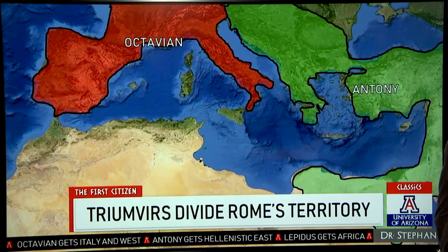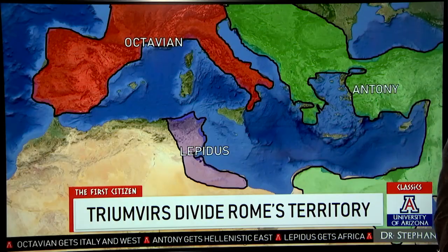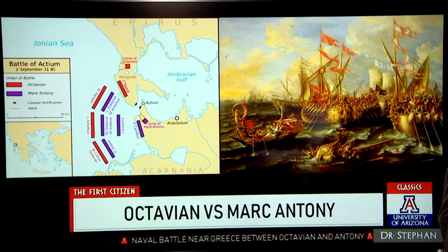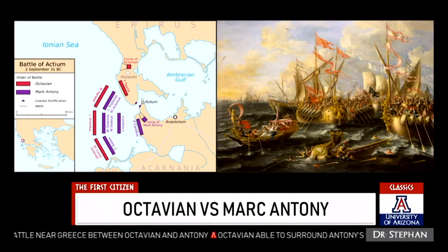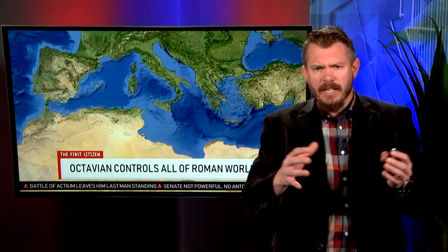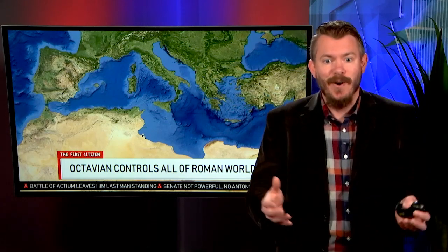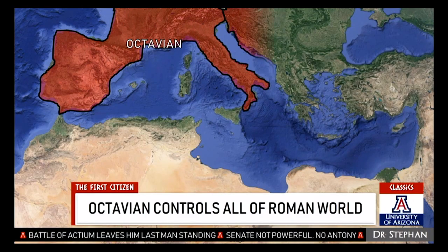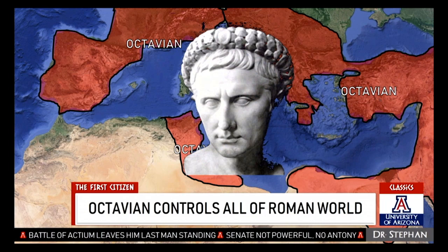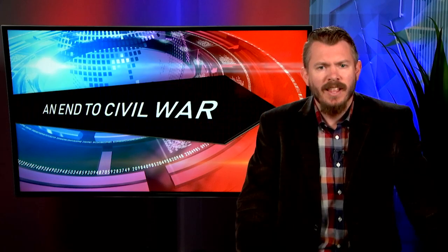Antony takes the Roman east — Macedonia, Greece, Asia, and Egypt — and poor little Lepidus is left with North Africa. Nobody cares about Lepidus. Eventually Lepidus rebels against Octavian, who defeats him and takes North Africa. Then the final battle between Octavian and Mark Antony occurs in 31 BC at Actium in northwestern Greece — a naval battle. Octavian traps Antony's ships against the coastline, and Antony and Cleopatra flee, go back to Egypt, and commit suicide. Octavian now rules the western Roman world, the eastern Roman world, and North Africa. The Senate isn't particularly powerful, having been laid low at Philippi, and he has nobody left to challenge him.